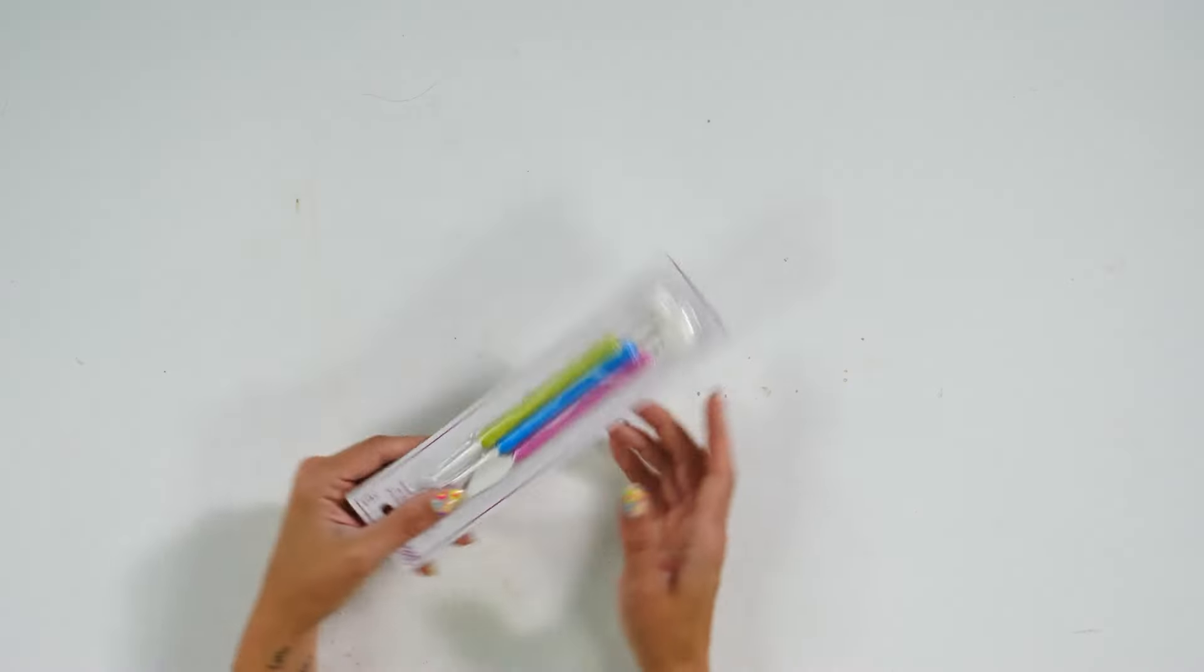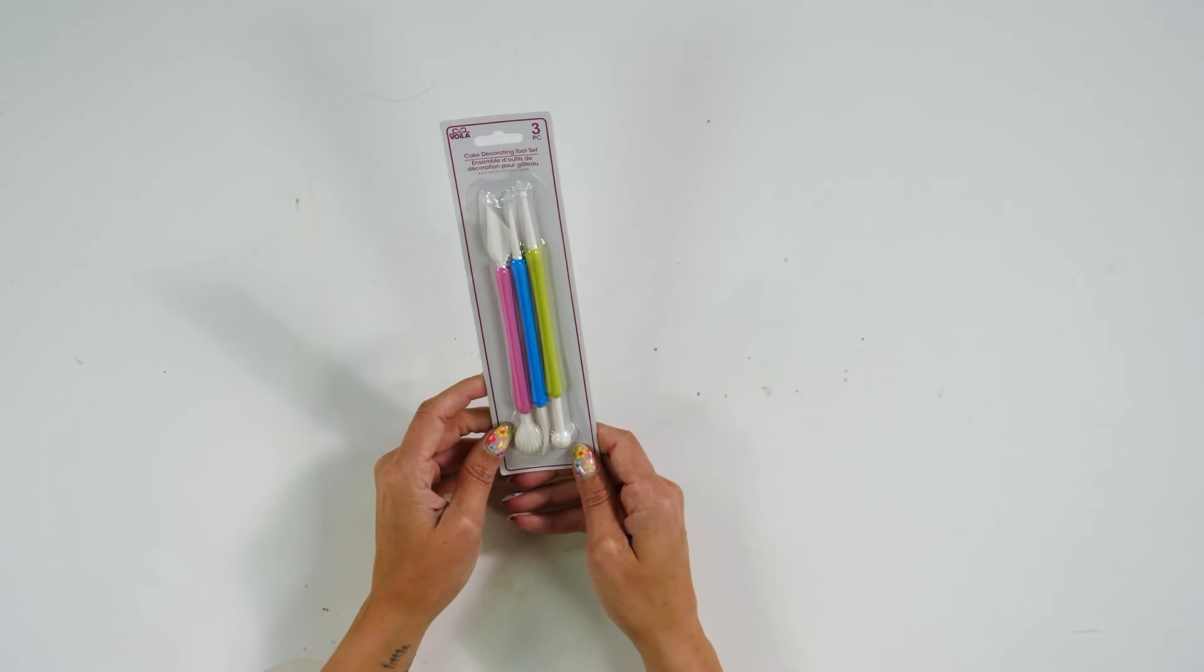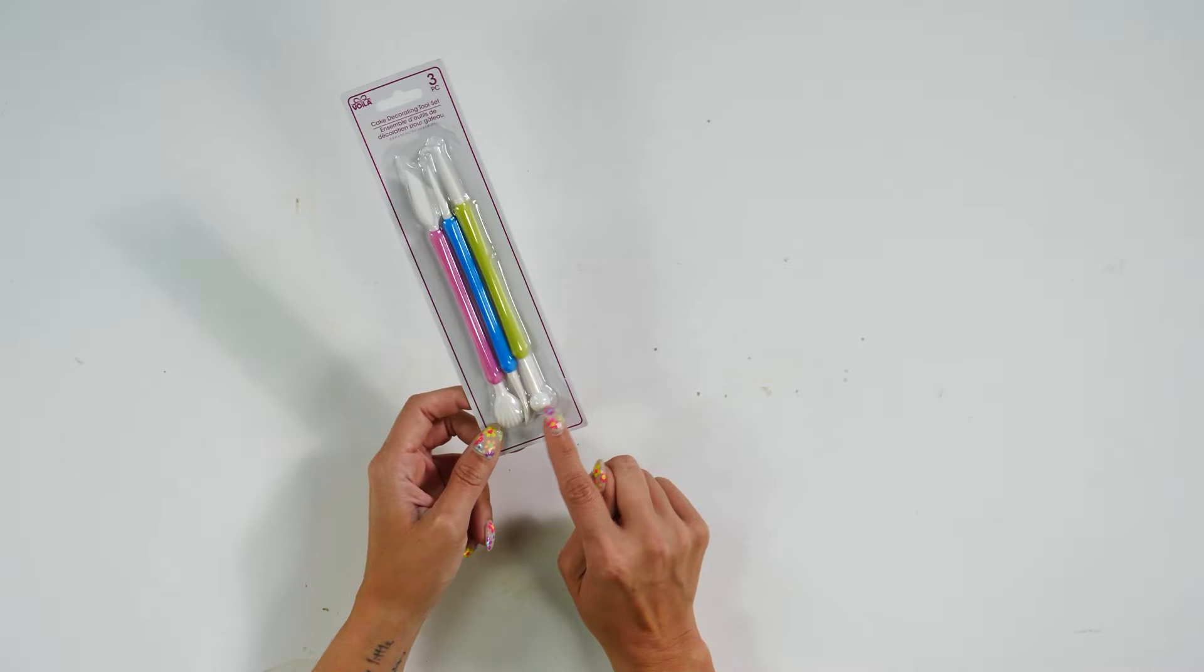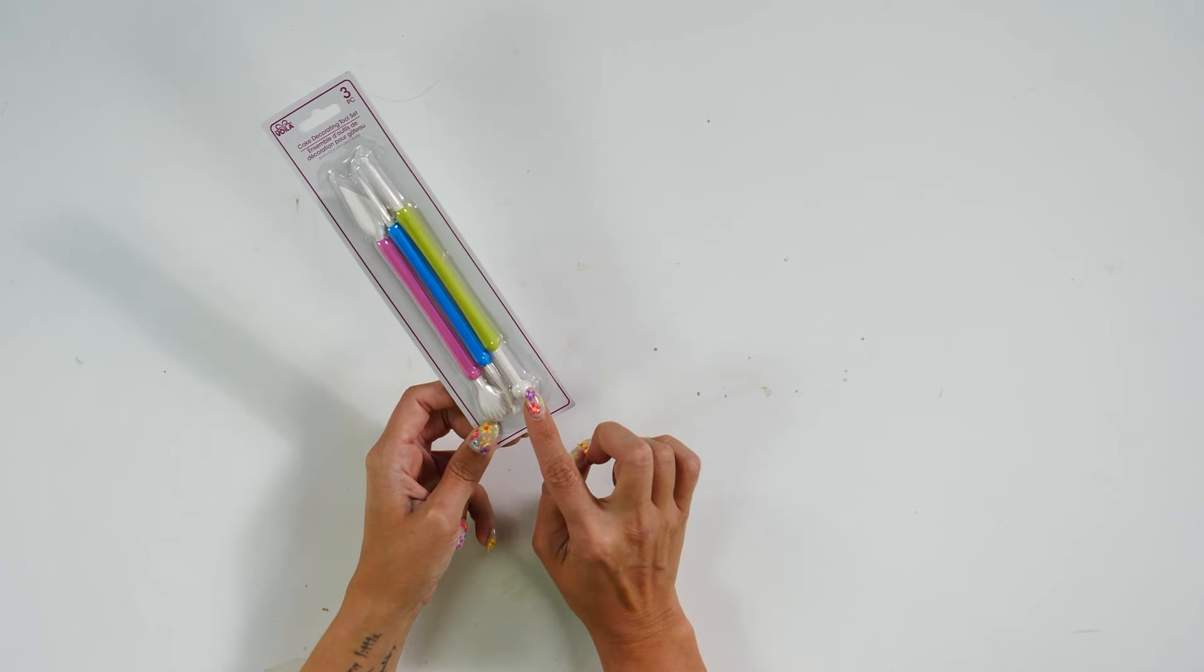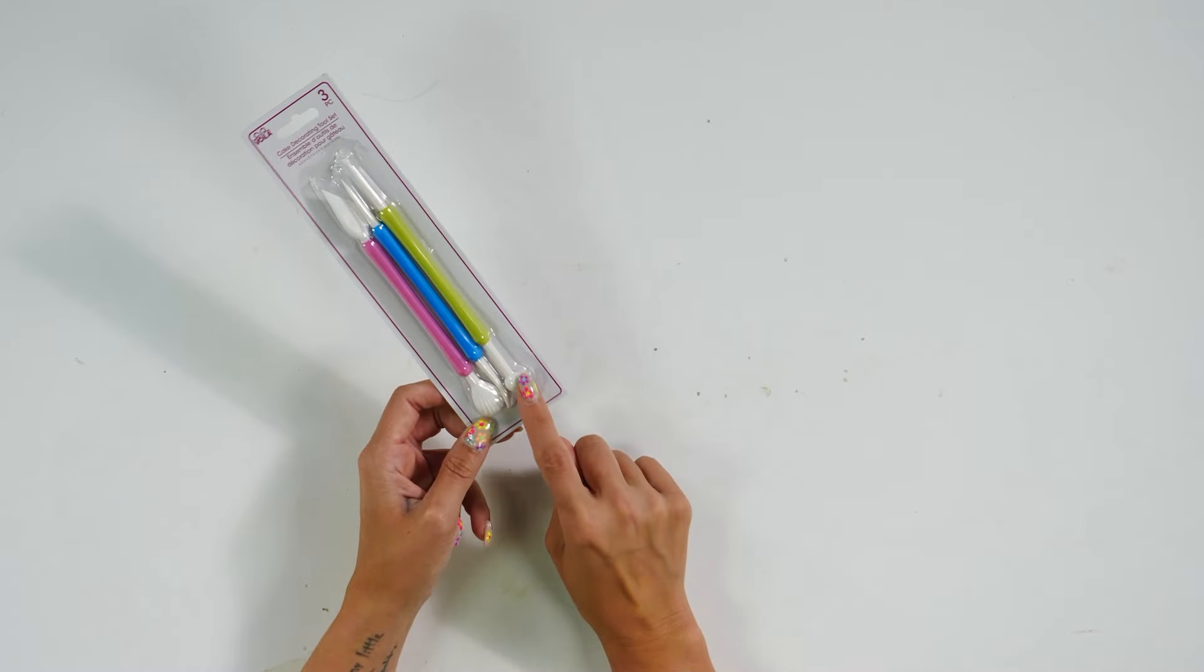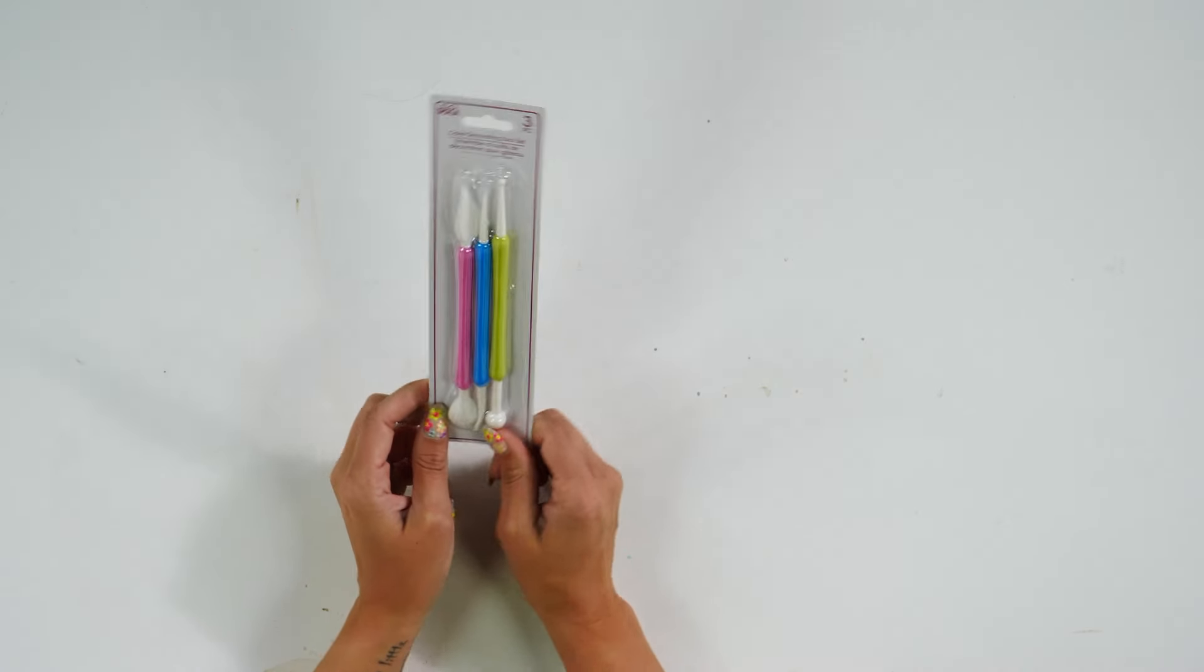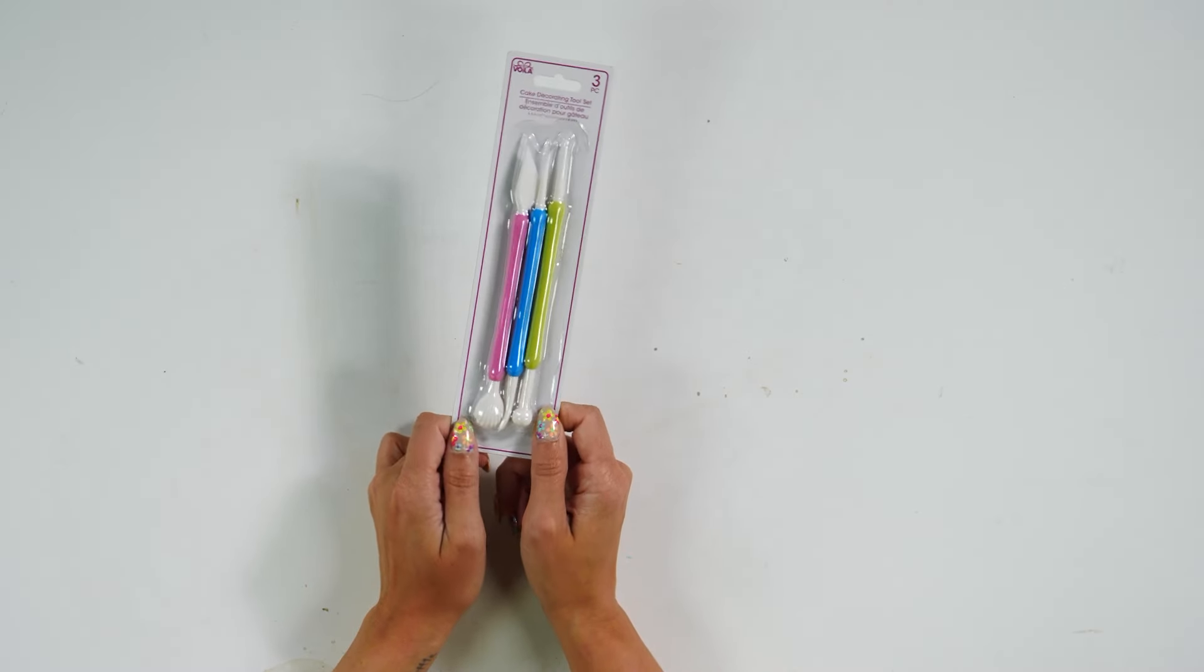This next item can also be found in the kitchen section, and this is the cake decorating tool set. We love using this for paper crafts. You have a dotter down here, and this is specifically used for fondant, but you can take this and really manipulate your paper, especially for flower petals. This one is great for flower petals, and you could even use this blue one to create the lines in the center of flower petals.